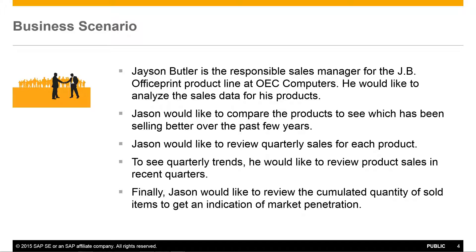Firstly, Jason would like to compare the products to see which has been selling better over the past few years. He would then like to review quarterly sales for each of these products, and to also see quarterly trends, Jason would like to review product sales in recent quarters. And finally, he would like to review the cumulative quantity of sold items to get an indication of market penetration.